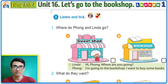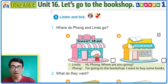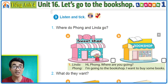1. 'Hi Fall, where are you going?' 'I'm going to the bookshop. I want to buy some books.' So: I'm going to the bookshop; I want to buy some books.